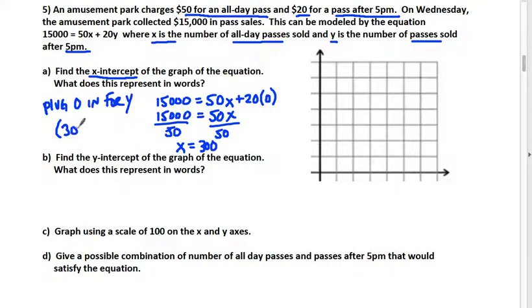Our x-intercept is 300 comma zero. This asks what does that represent in words. Well, when I have 300 X's, or all-day passes, then I would have sold zero Y, which is passes after 5 p.m. So I could sell 300 all-day passes and zero passes after 5 p.m.